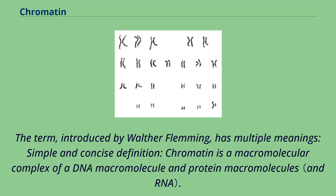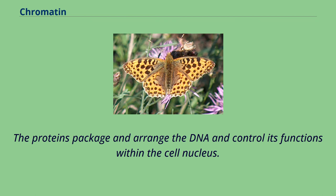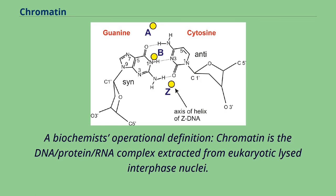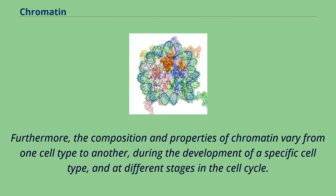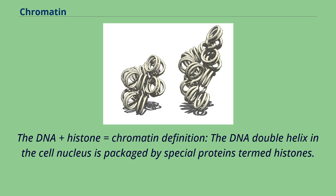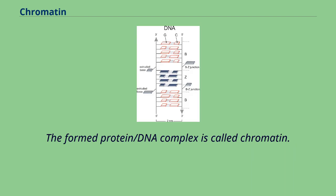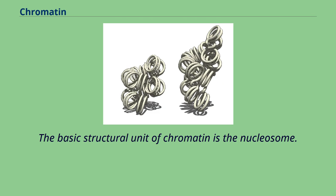The term chromatin, introduced by Walter Fleming, has multiple meanings. A simple and concise definition: chromatin is a macromolecular complex of a DNA macromolecule and protein macromolecules. The proteins package and arrange the DNA and control its functions within the cell nucleus. A biochemist's operational definition: chromatin is the DNA/protein/RNA complex extracted from eukaryotic lysed interphase nuclei. The composition and properties of chromatin vary from one cell type to another, during the development of a specific cell type, and at different stages in the cell cycle. The DNA-plus-histone definition: the DNA double helix in the cell nucleus is packaged by special proteins termed histones; the formed protein/DNA complex is called chromatin, and the basic structural unit of chromatin is the nucleosome.